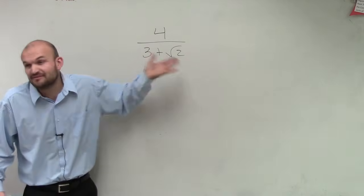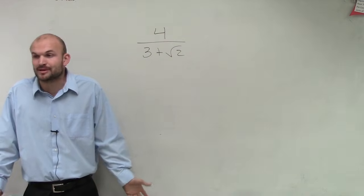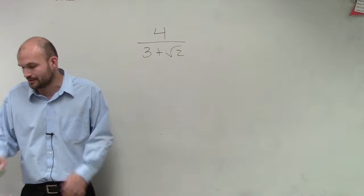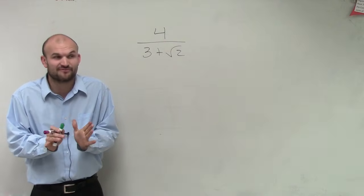So what you notice here is that we have the square root of 2 on the denominator. So we have to get the square root of 2 off the denominator, all right? We went over this last class period just very briefly.